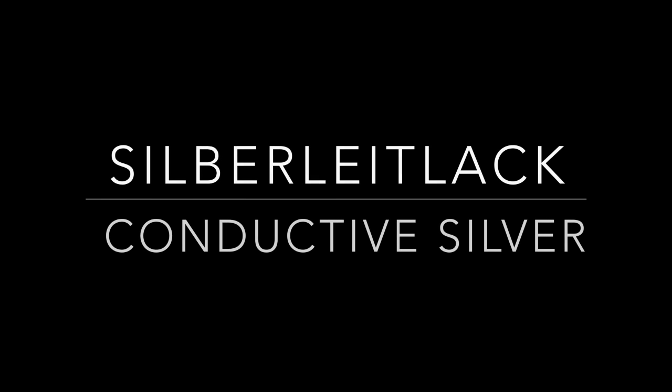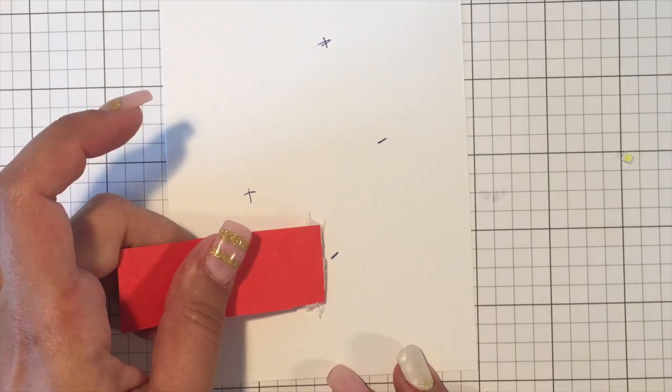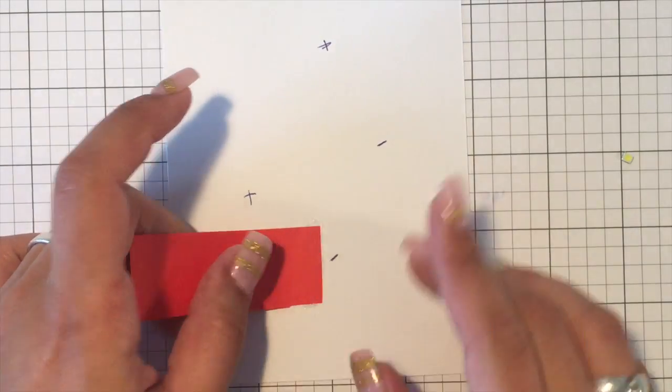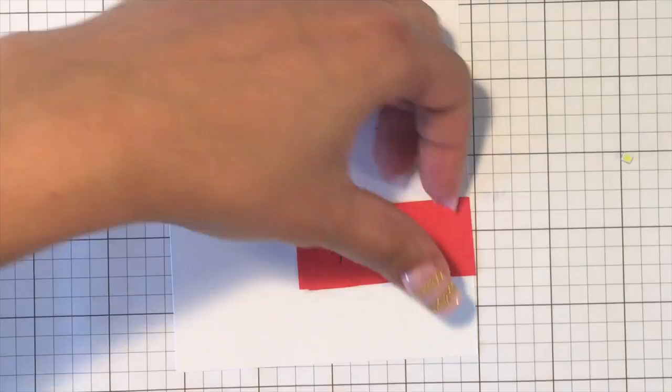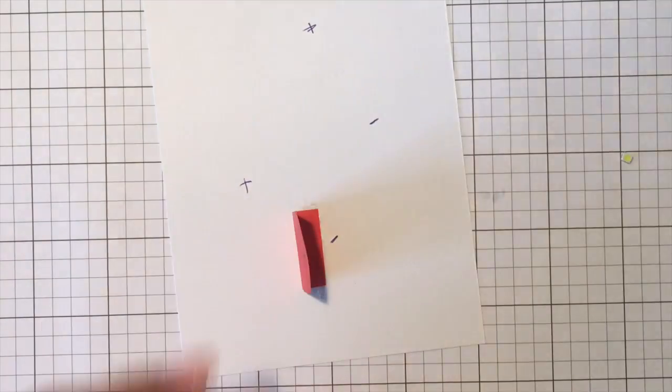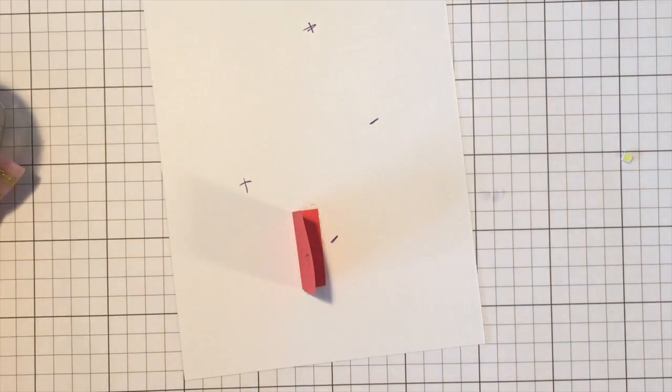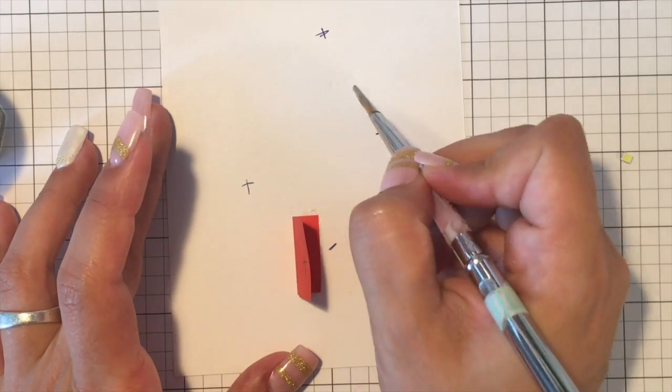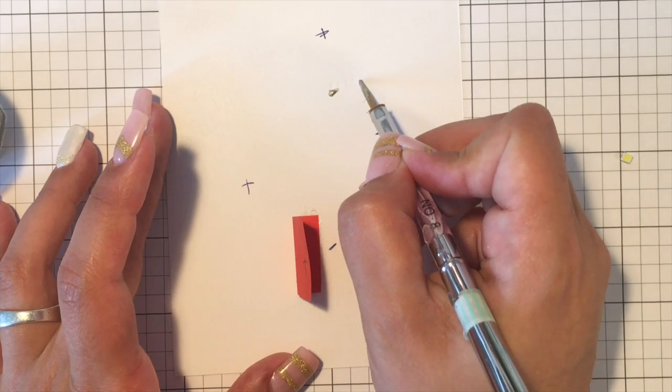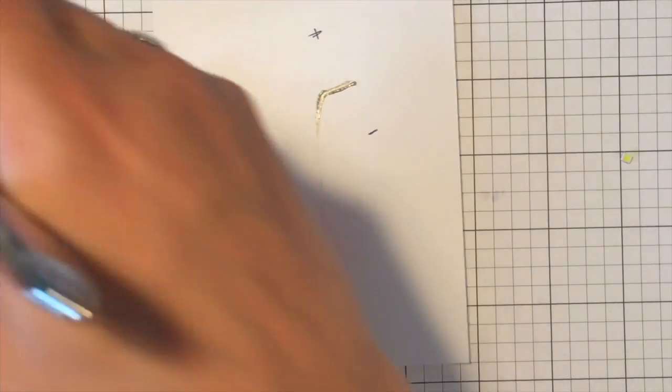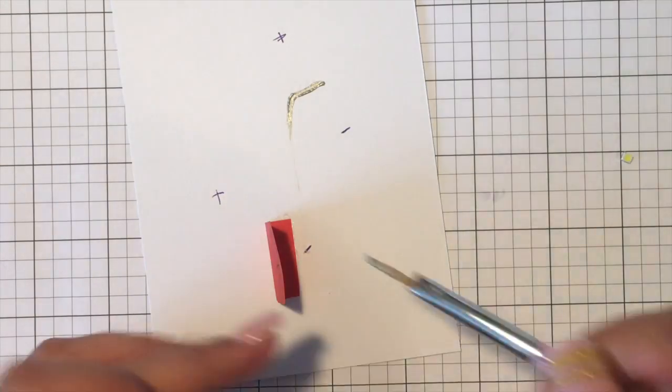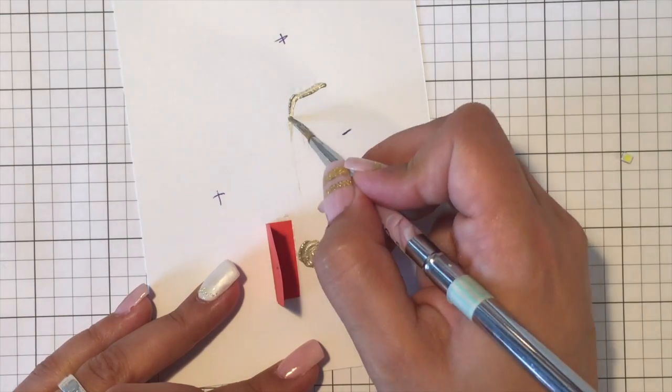Last but not least I want to show you how to make LED cards using conductive silver. This is the expensive way but also the easiest. The beginning is just as in the other two variants. We need to make a control, and the only thing we have to do now is to draw in our circuit with the conductive silver.